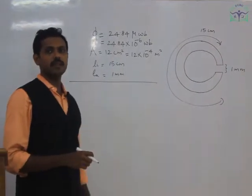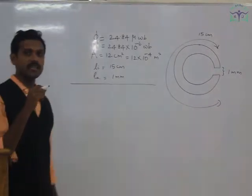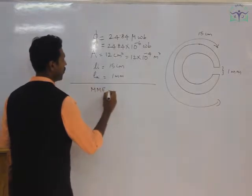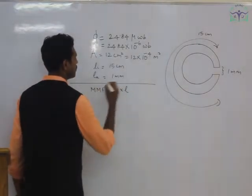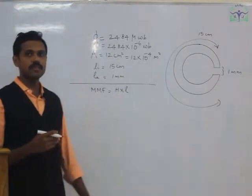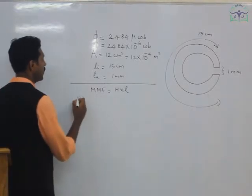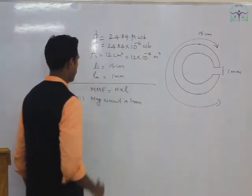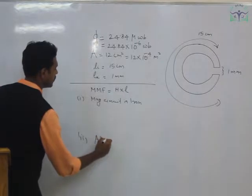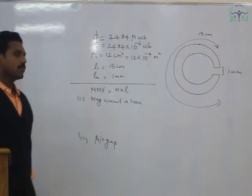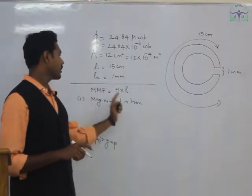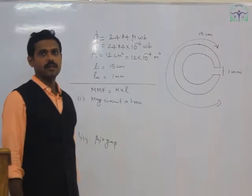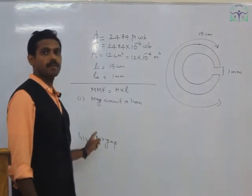We have derived the important relation for MMF: MMF = H × L. We split this circuit into two portions — first, the magnetic circuit in iron, and second, the air gap. We calculate the MMF for each portion separately. The total MMF is found by adding the MMF for iron and the MMF for the air gap.